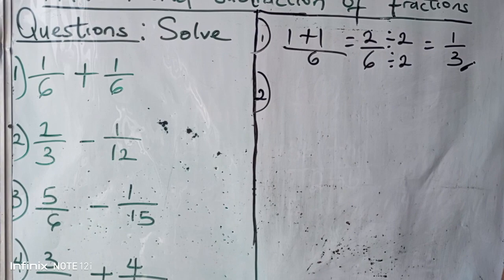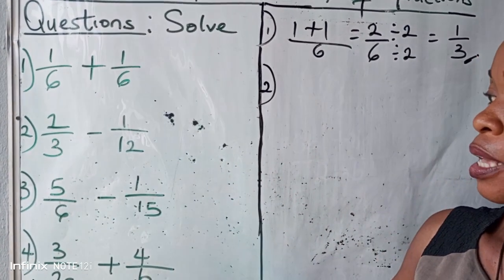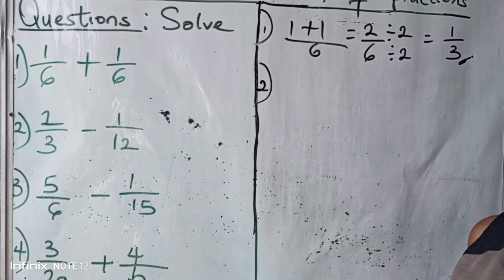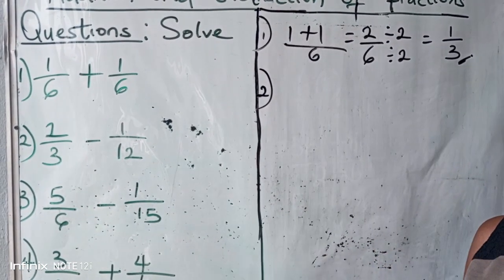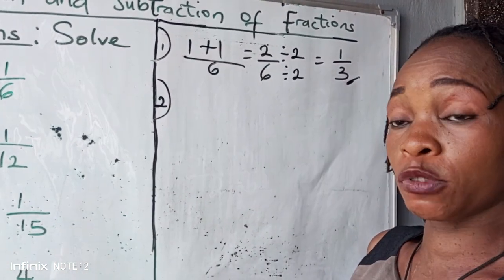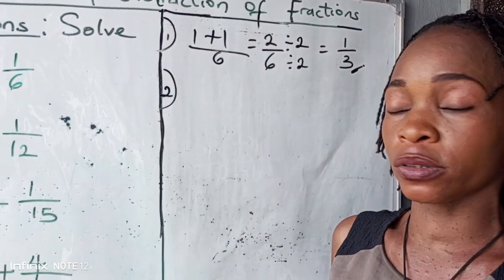Question number two. Here, we have two different denominators. Now, check. Is twelve a multiple of three? How do you know that? When you recite the multiplication table, do we have twelve there? Yes. Three times four gives us twelve. That means twelve is our LCM.